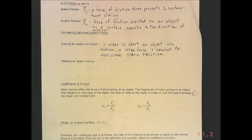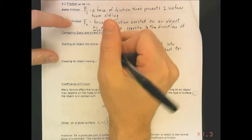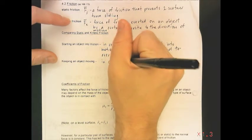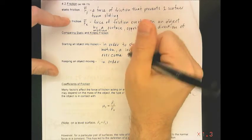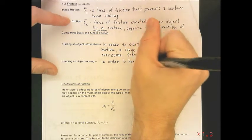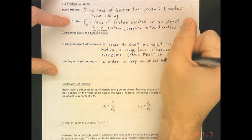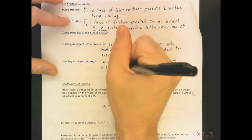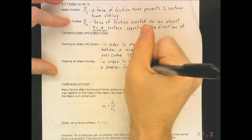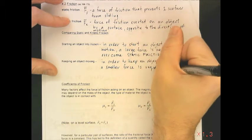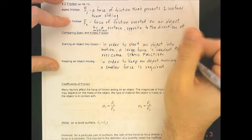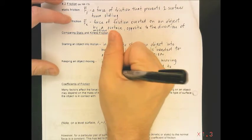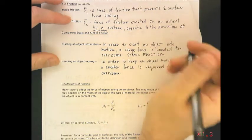In the case when the object is already moving, a smaller force is required to keep it moving in order to overcome kinetic friction. In other words, to keep an object moving, a comparatively smaller force is required to overcome kinetic friction.